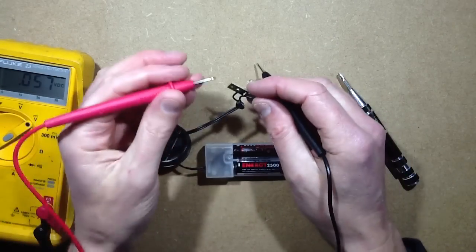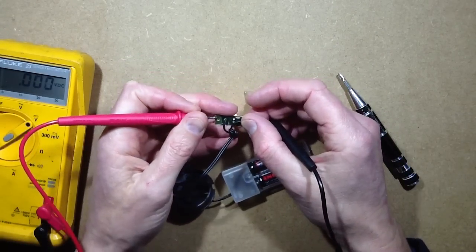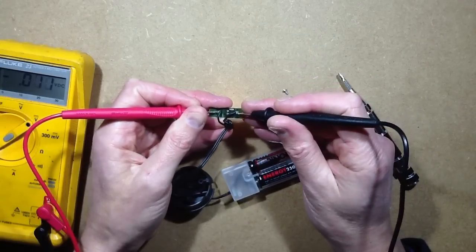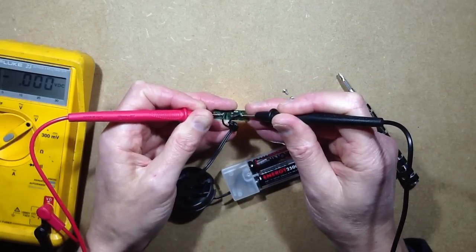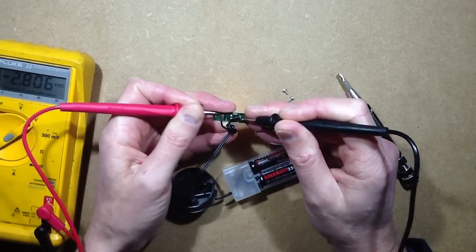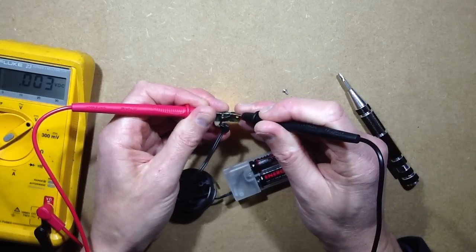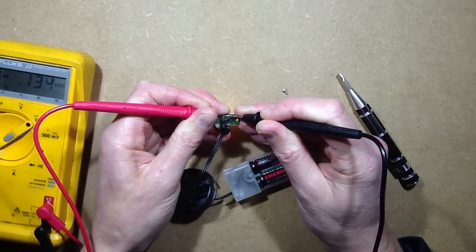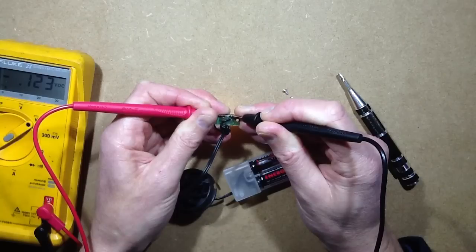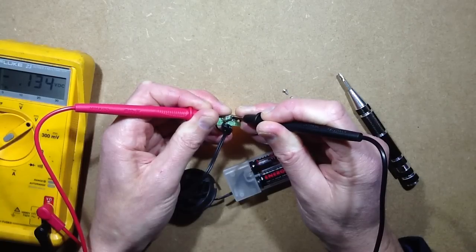So the voltage I've got coming up from the battery pack is 2.8 volts, and the voltage across the resistor is very low. It's actually 0.134.